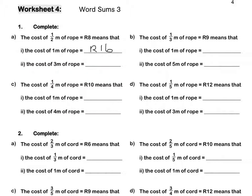Second question: the cost of 3 metres of rope. We say 16 times 3 to get an answer of 48 rand. Do a sum on the side if necessary. Pause this video to complete Question 1 by yourself.